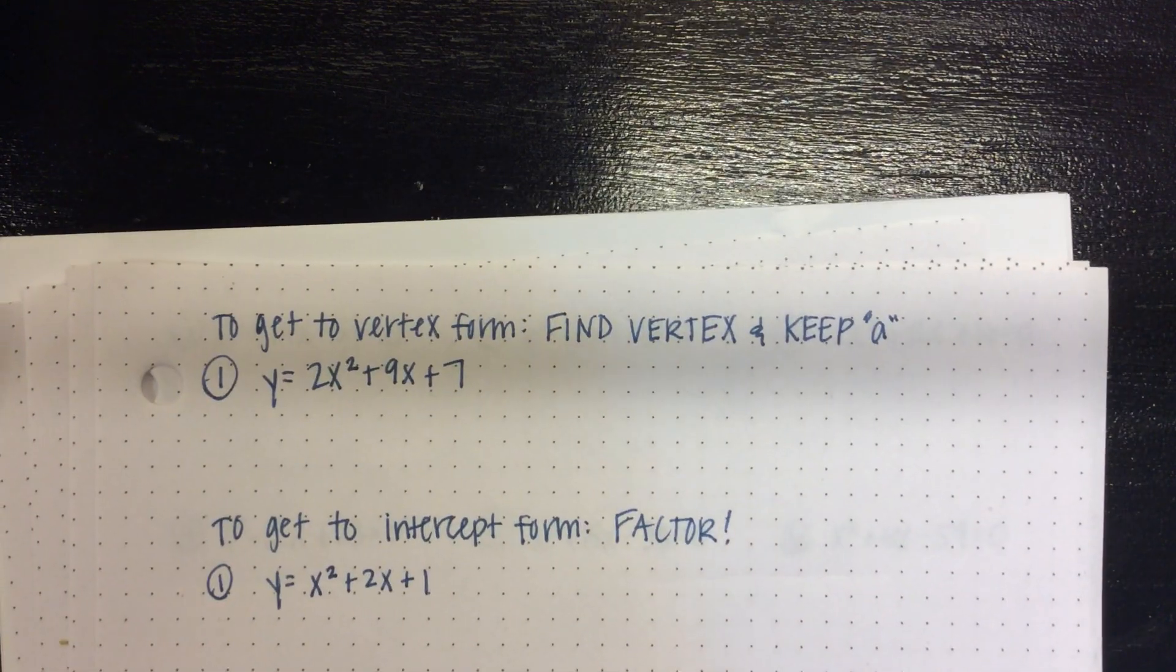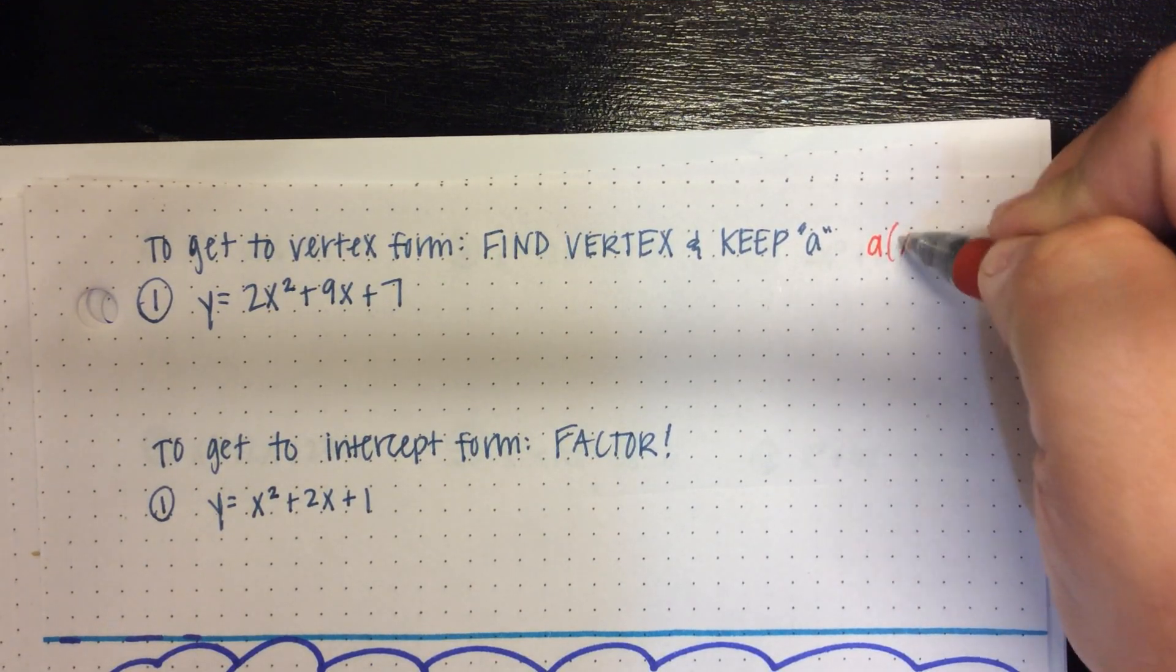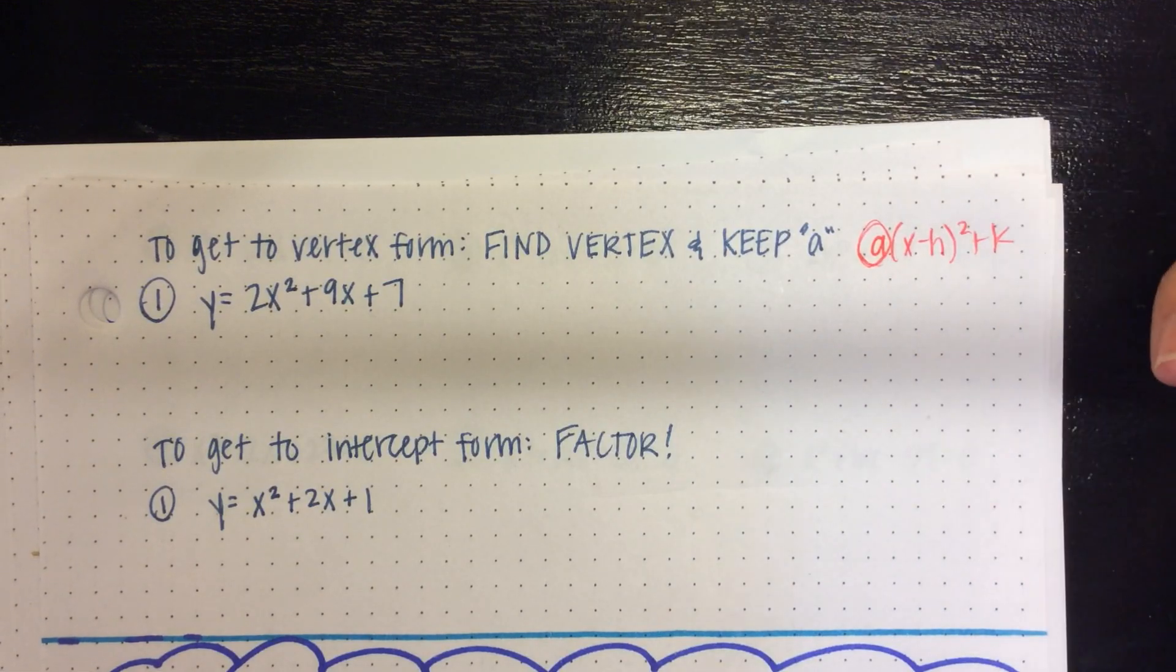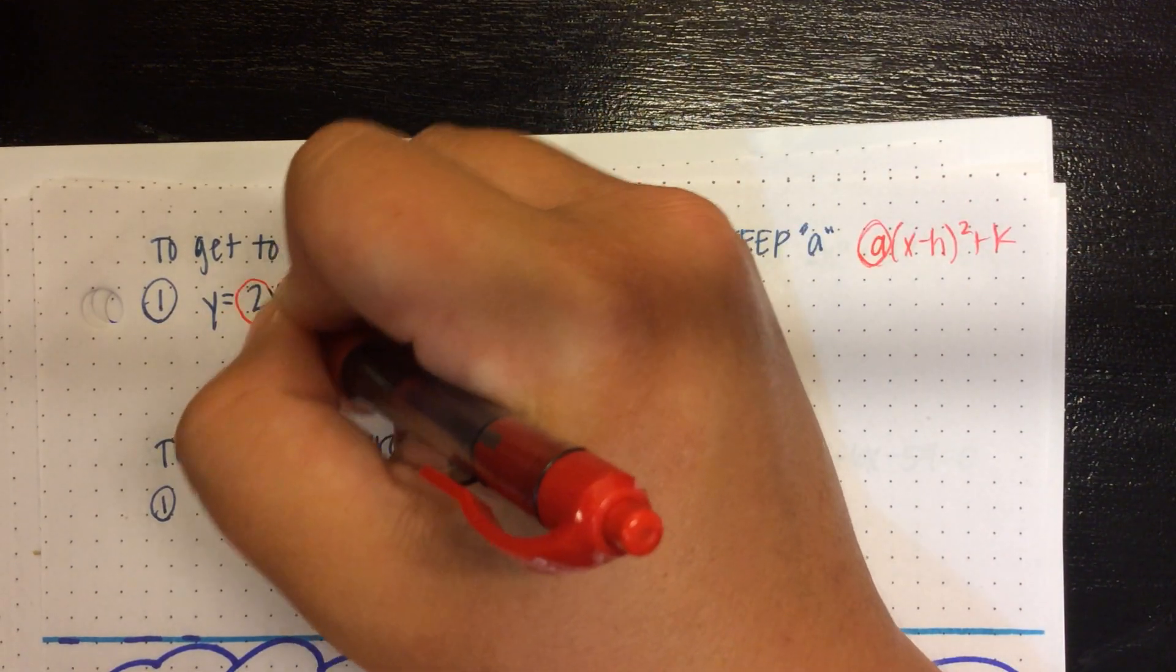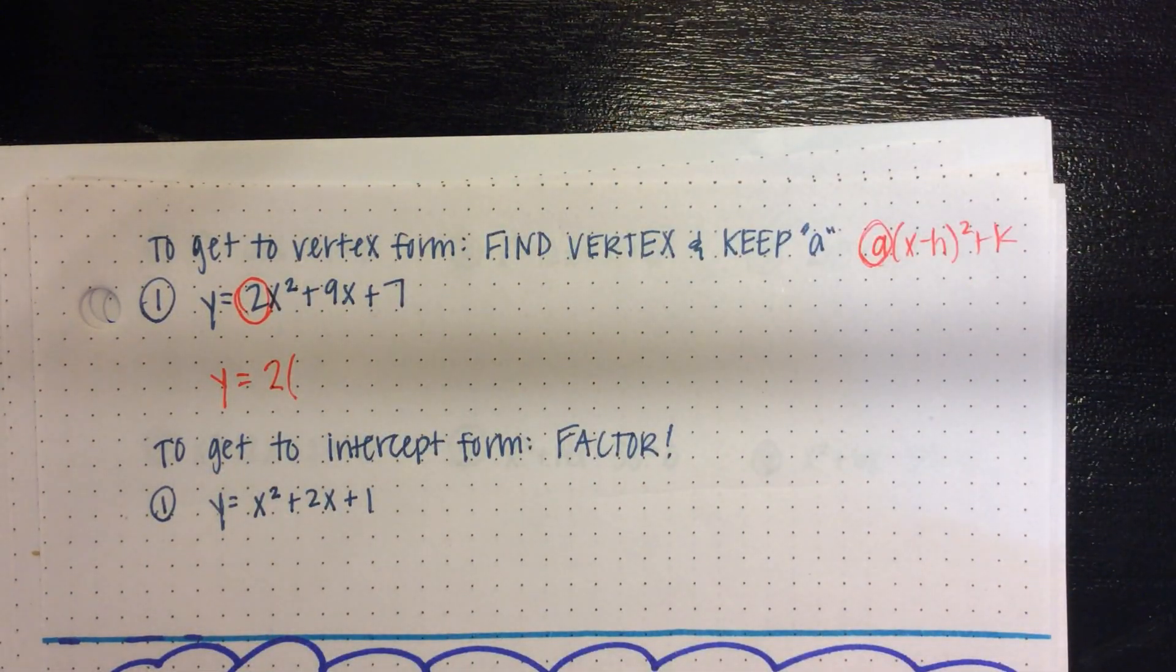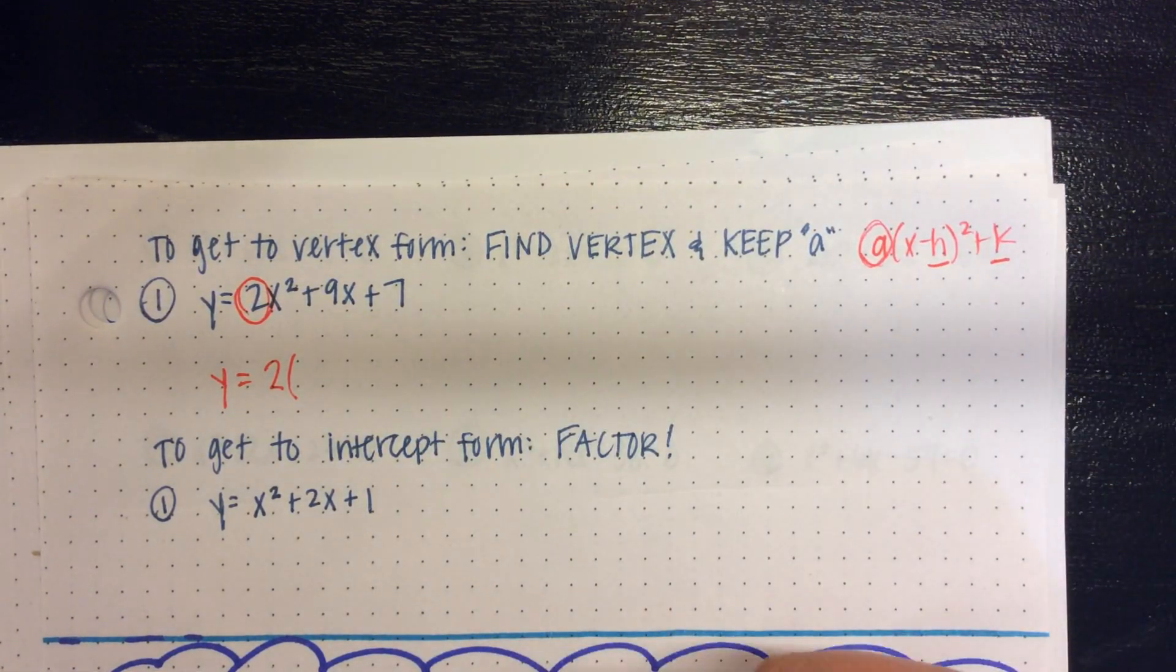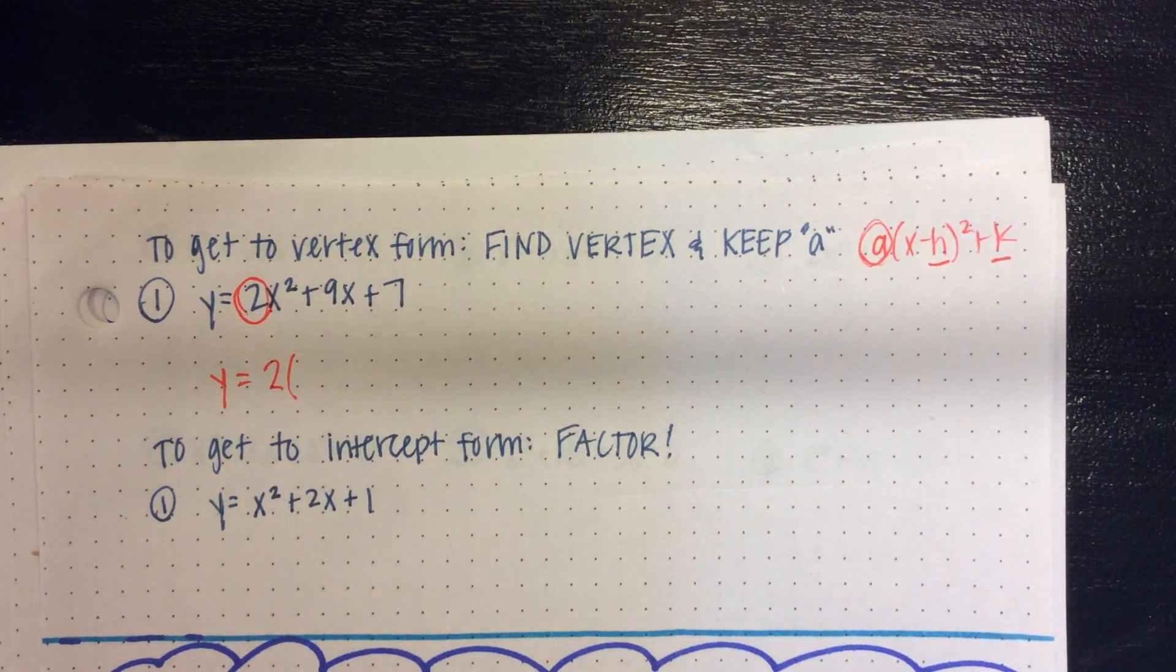To get to vertex form, remember, vertex form is that a times x minus h squared plus k. You have the same a across all three forms. So whatever a you start with, you're going to keep for vertex form. So for this first one, that 2 is going to be the first part of my equation, right? So I'm going to have y equals 2 times something. To get the rest of vertex form, I need my hk point, which is my vertex. So I'm going to go from standard form to vertex form by finding the vertex.